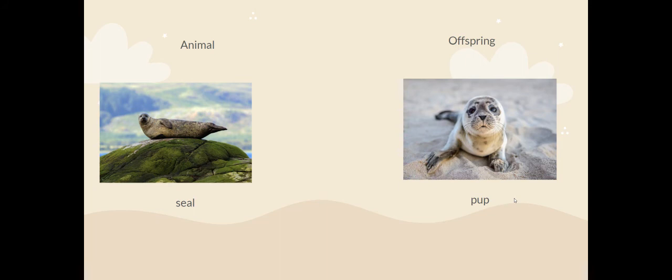The last one we're going to look at is a seal. A seal's offspring is called a pup. Look how cute it is! What's the same and what's different about a seal and a pup? They've got the same features. The pup just looks much smaller and it's got more of a furry layer on its skin.